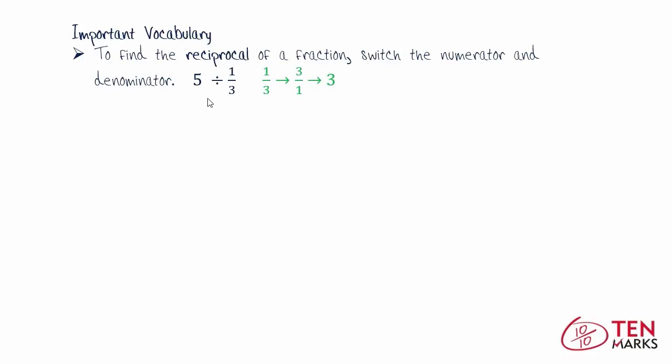So in the expression that you just came up with, five divided by one-third, you need to find the reciprocal of one-third. So you're going to switch, as you see here, the numerator and the denominator. The one moves to the denominator, and the three moves to the numerator. So one-third becomes three.